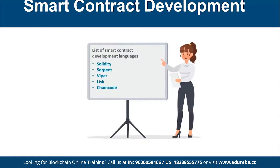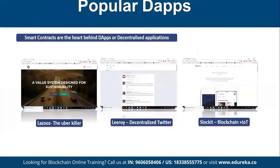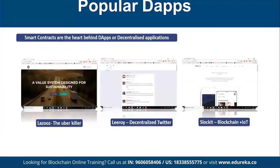DApps means decentralized applications — that's just a shortcut. Smart contracts are the heart behind all these decentralized applications. Popular examples include Lazos (an Uber killer), Lero (a decentralized Twitter), Blockade, blockchain-based IoT platforms — these are all different kinds of distributed decentralized applications.